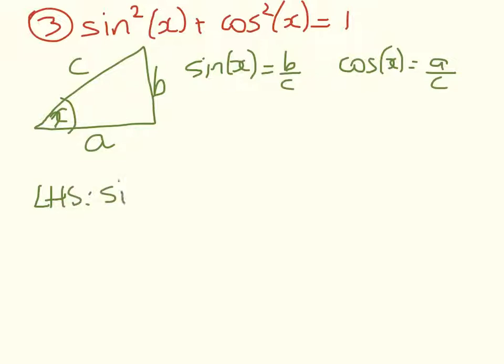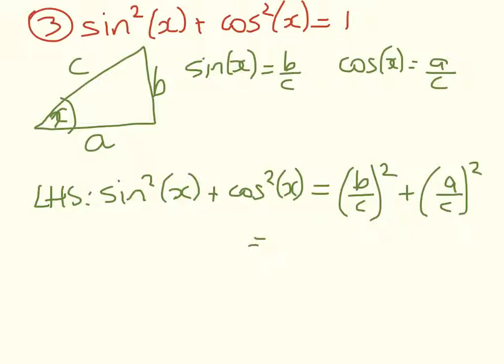Left-hand side: sine squared of x plus cosine squared of x is equal to b over c squared plus a over c squared. A little bit of algebra. B squared over c squared plus a squared over c squared equals b squared plus a squared over c squared. I just need to insert a new slide. So on the last slide we had equals b squared plus a squared over c squared.